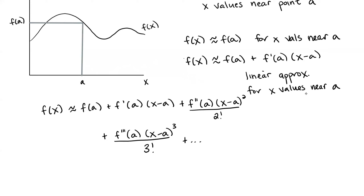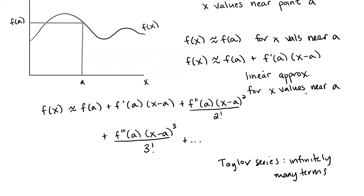So if we have infinitely many terms, that's called a Taylor series. And if we just have a finite number of terms, then that's a Taylor polynomial. For example, if we stop at our third derivative, then this would be a Taylor polynomial of degree three.